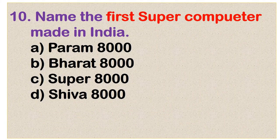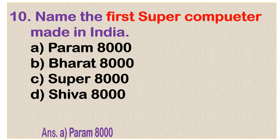Question number 10: Name the first supercomputer made in India. Options are Param 8000, Parat 8000, Super 8000, and Shiva 8000. Option A is the correct answer: Param 8000.